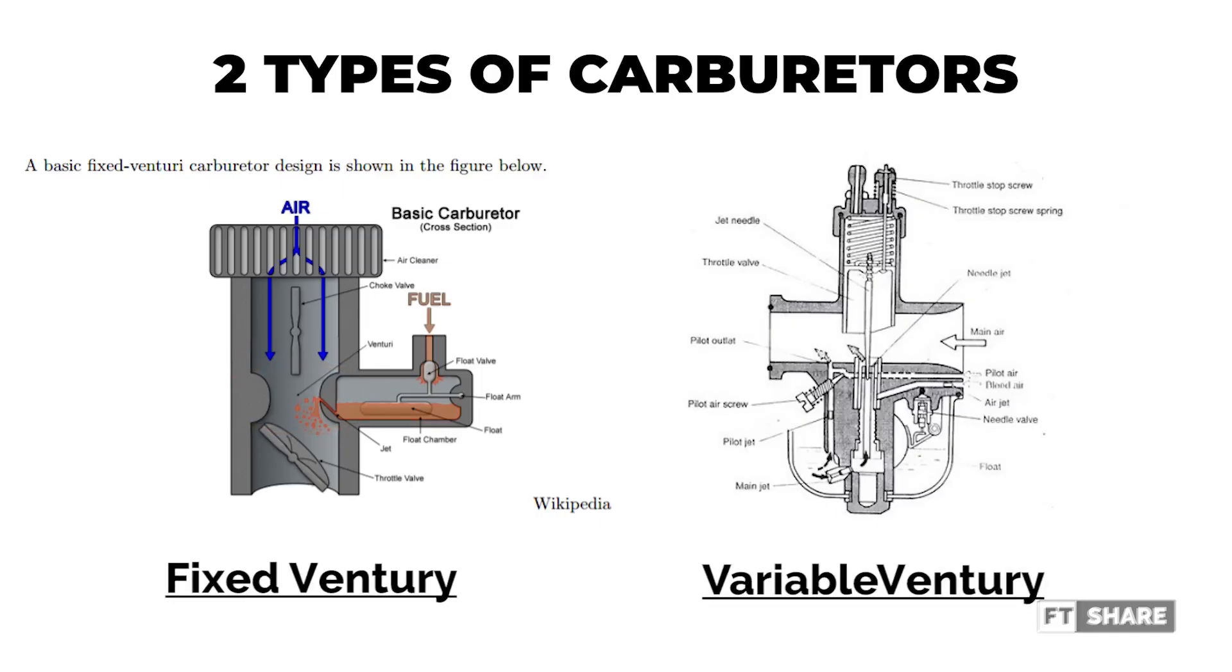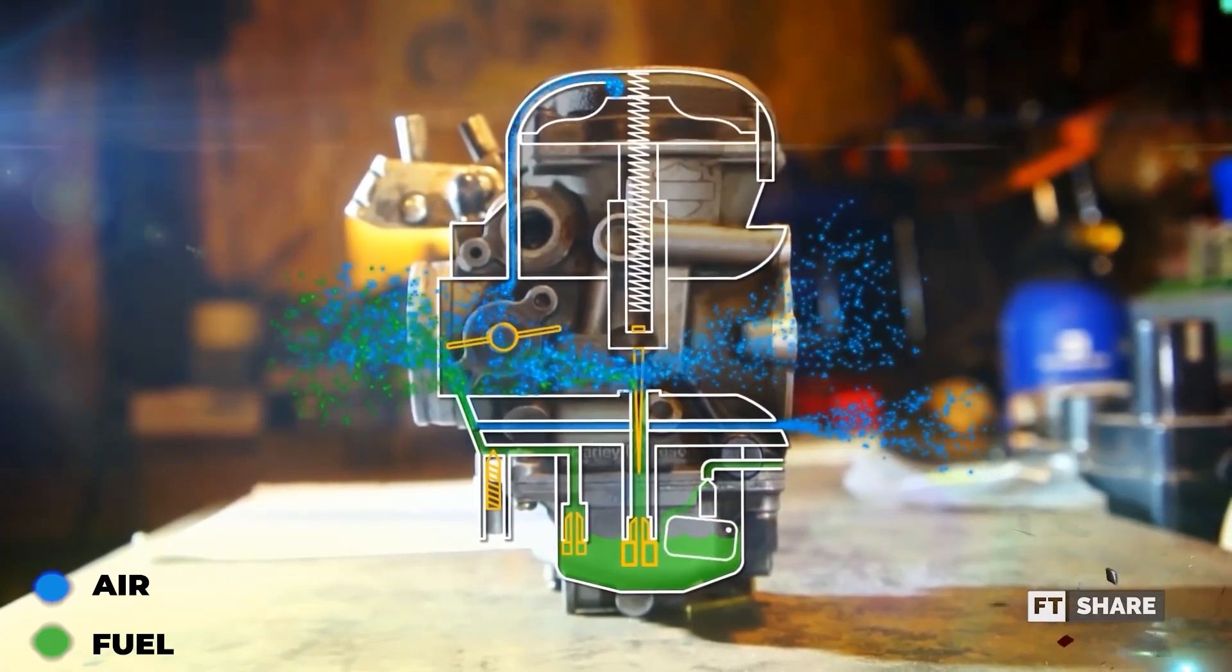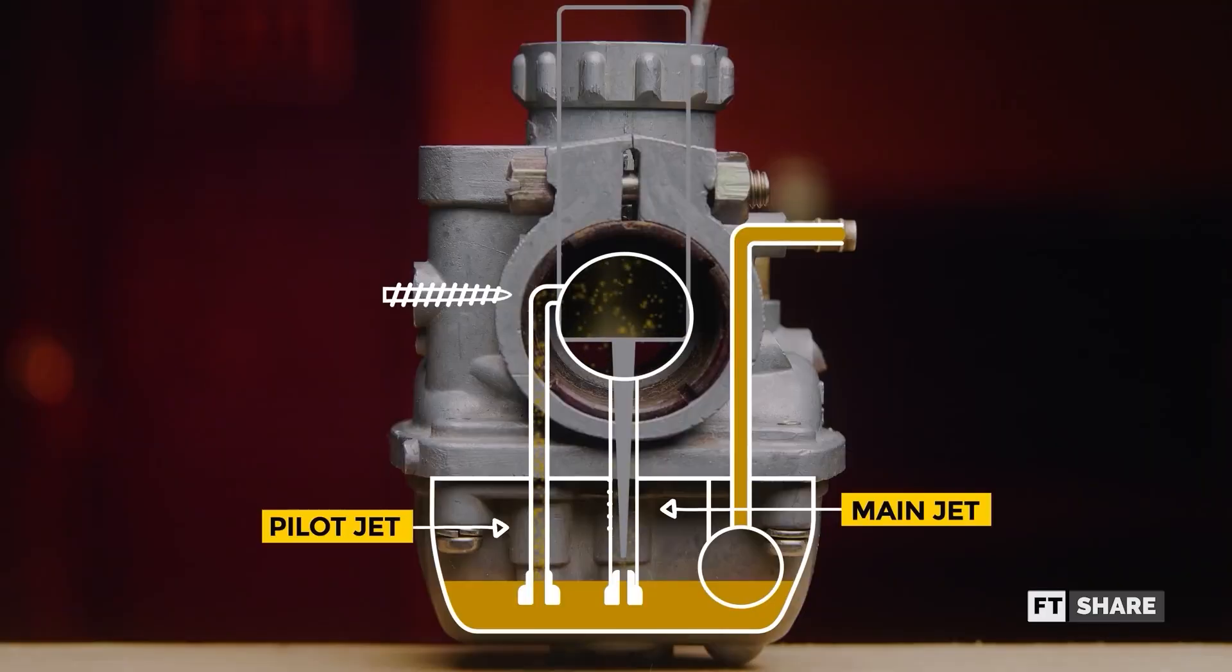There are two types of carburetors, fixed venturi and variable venturi. In a fixed venturi carburetor, the diameter of the venturi cannot be changed. The variable venturi carburetor, on the other hand, is widely used in small engines, such as motorcycle engines. This video will focus on the variable venturi type of carburetor.